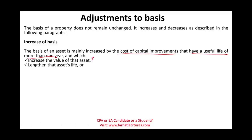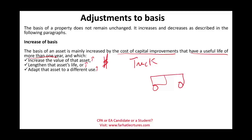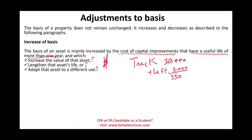Capital improvements increase the value of the asset, extend the length of the asset's life, or adapt the asset to a different use. For example, suppose we purchased a truck for $30,000 and then added a lift costing $3,000 — a device that allows workers to lift heavy items onto the truck. This lift increases the value of the asset, so we add the $3,000 to the truck's basis, making the new basis $33,000.